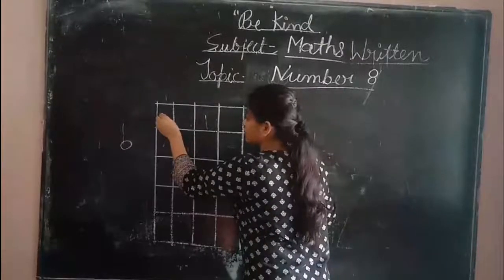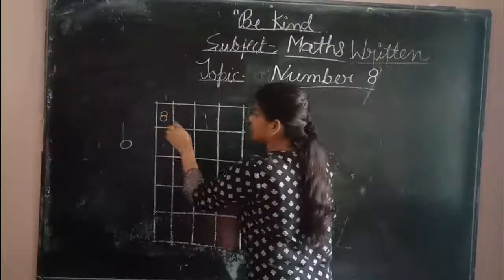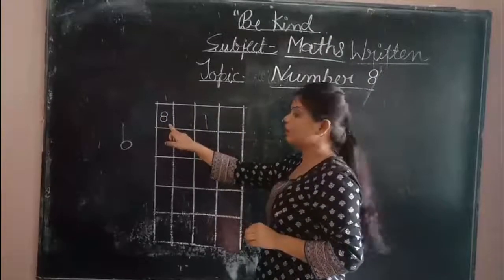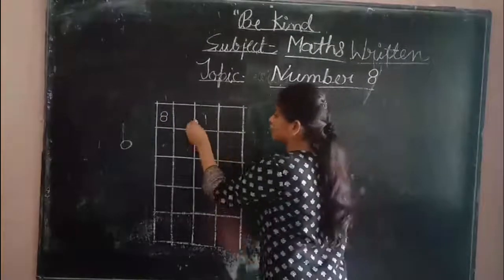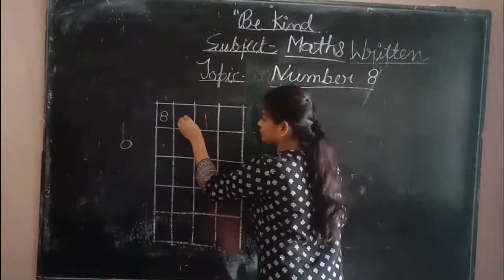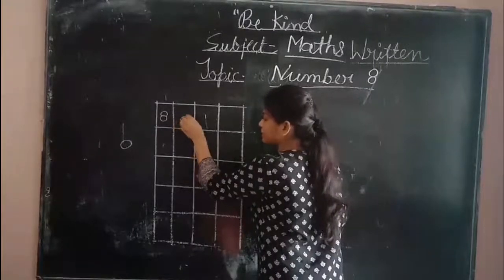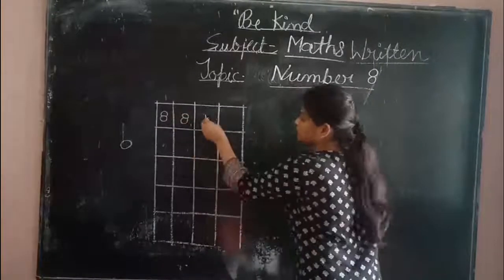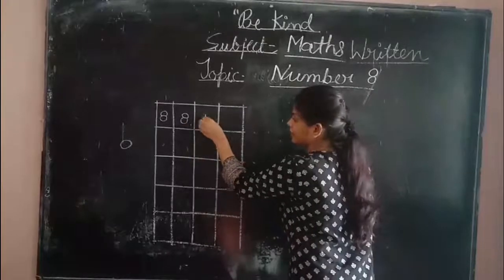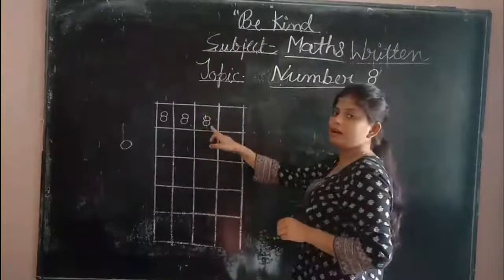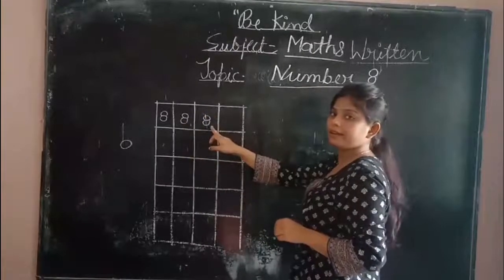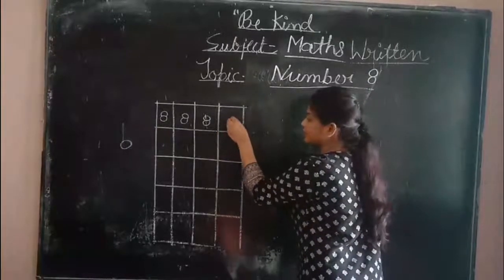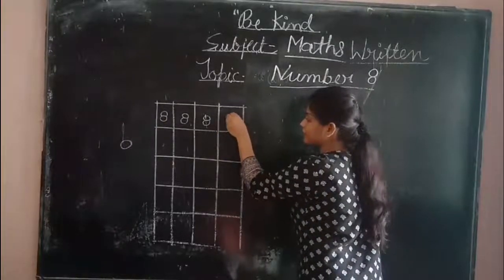And now we will see — one circle. What is the one? One. Circle, again circle. Circle, again circle.